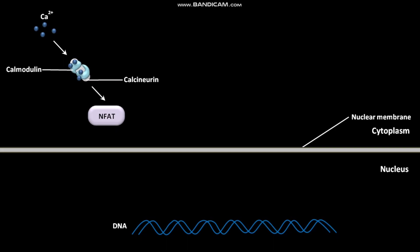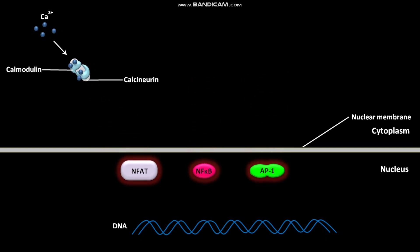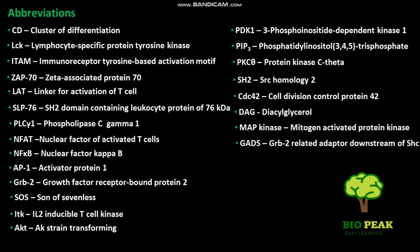The calcium ions present in the cytoplasm cause activation of calcineurin, causing NFAT to become active. Active NF-KB, active AP1, and active NF-AT then translocate into the nucleus, where they bind to specific regions of DNA. As a result of these bindings, active NF-AT, active NF-KB, and active AP1 cause gene activation.